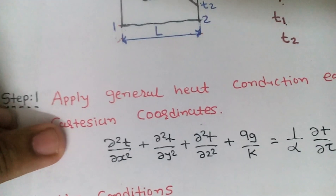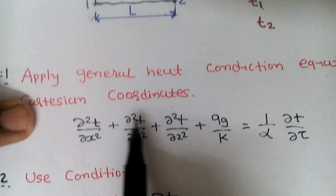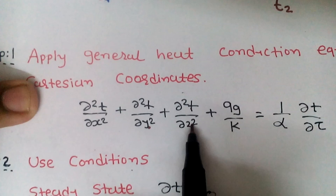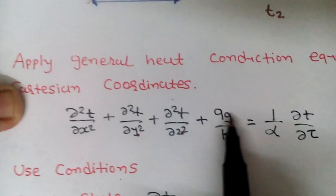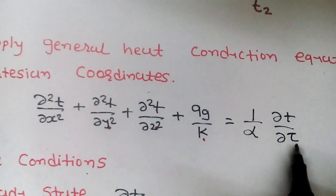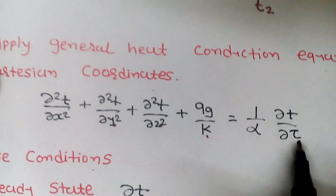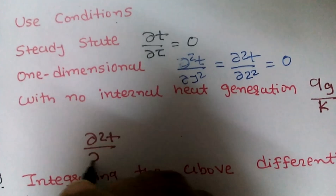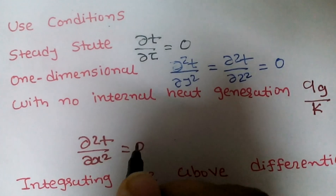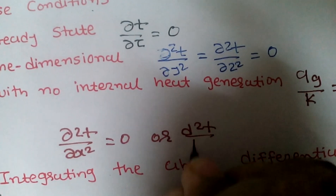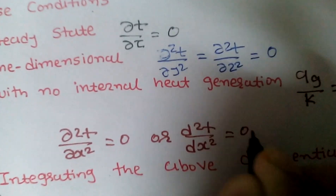Applying all three conditions, the above general equation reduces to: ∂²T/∂x² = 0. This is because ∂²T/∂y² = 0, ∂²T/∂z² = 0, qg/k = 0, and ∂T/∂τ = 0. So the simplified equation is ∂²T/∂x² = 0.